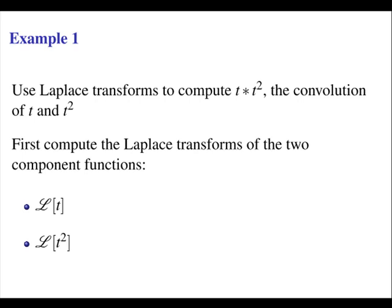Let's look at an example. Use Laplace transforms to compute the convolution of t and t squared. First, compute the Laplace transforms of the two component functions. The Laplace transform of t is 1 over s squared — that's coming from the tables. The Laplace transform of t squared is 2 factorial over s to the power of 2 plus 1, which is 2 over s cubed.